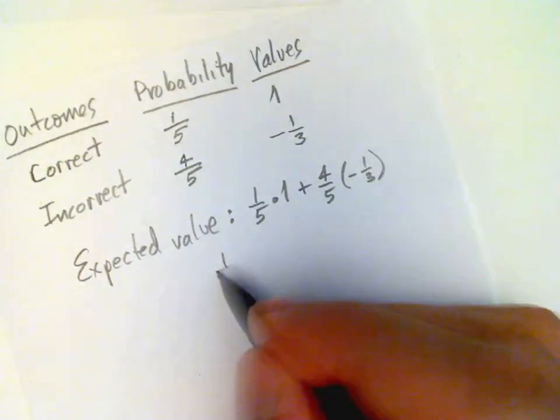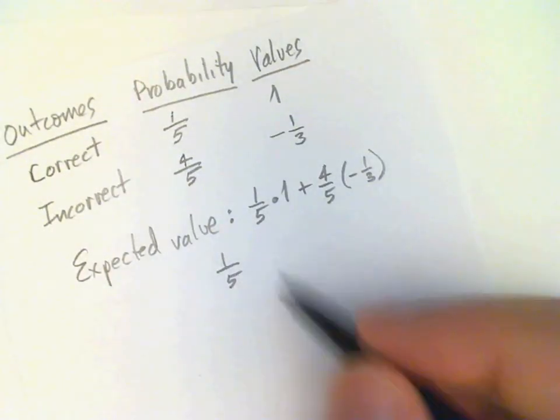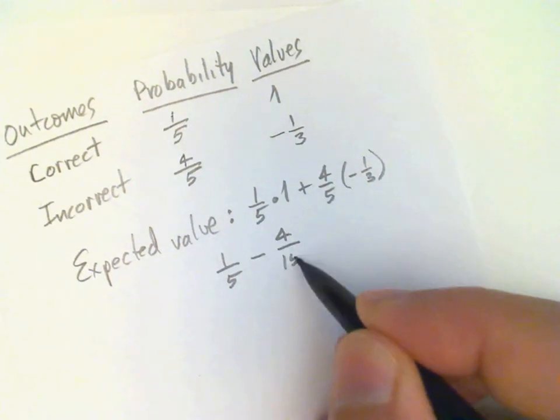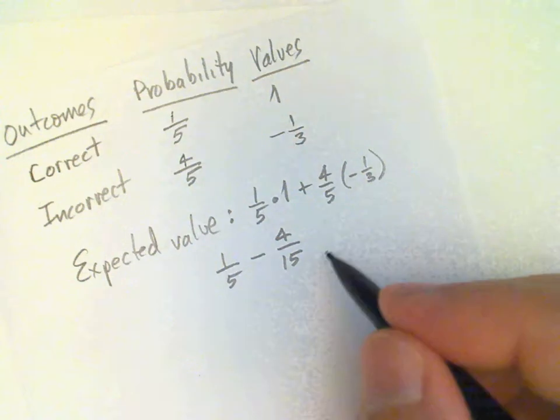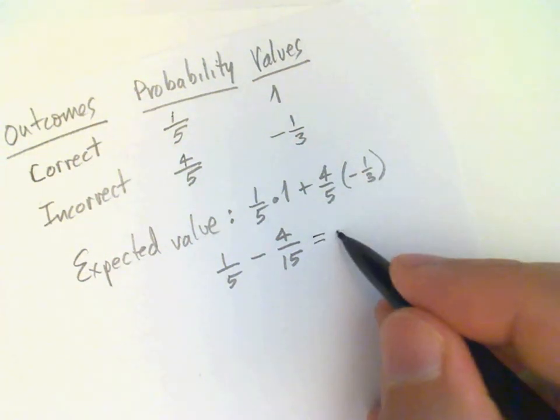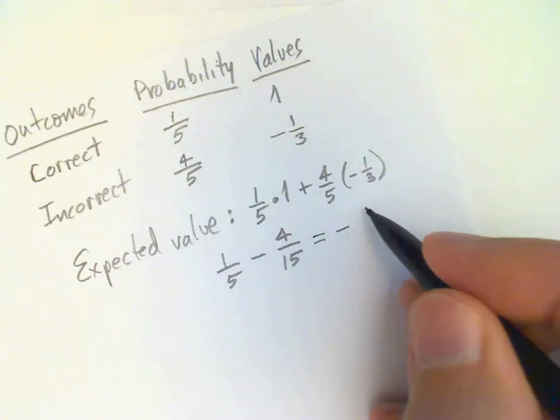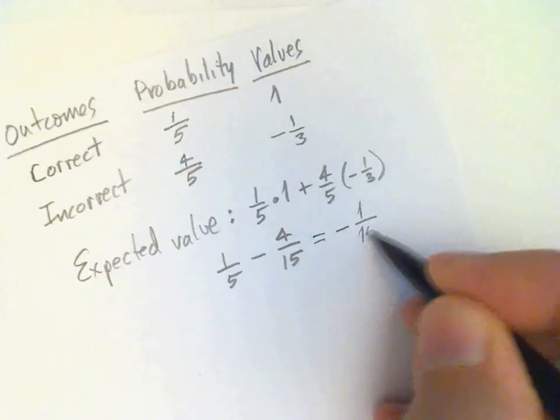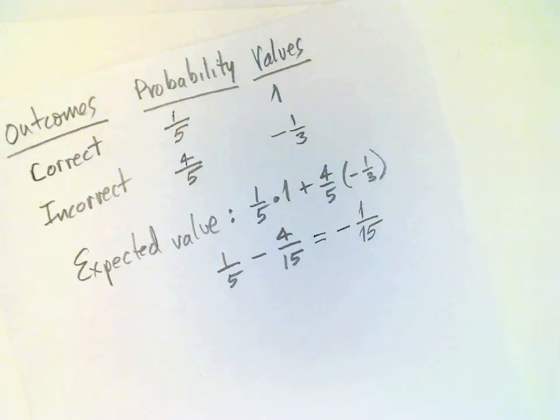So that's one-fifth minus four-fifteenths, or negative one-fifteenth. One-fifth is three-fifteenths.